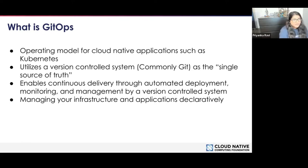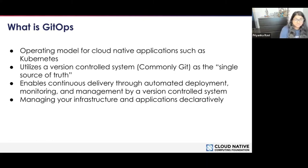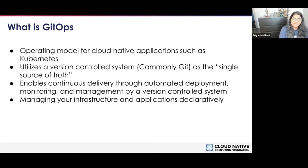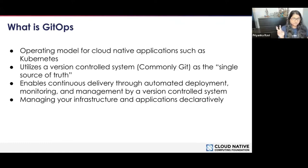What is GitOps? GitOps is an operating model for cloud-native applications such as Kubernetes, though it's not just for Kubernetes — if you're doing multi-cloud infrastructure, you can still use GitOps for other platforms. It utilizes a version-controlled system, most commonly Git, but you can utilize other sources of truth. Most commonly, you'll see Git as the single source of truth, so you have something like an audit trail.